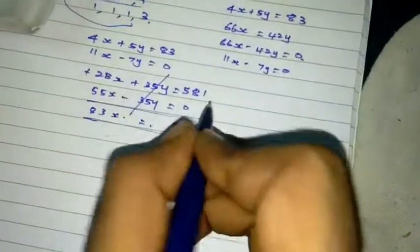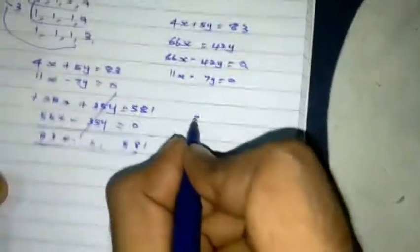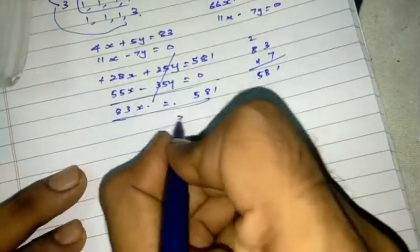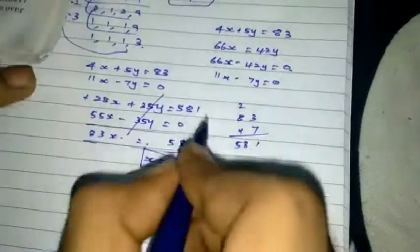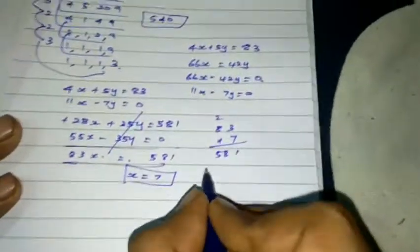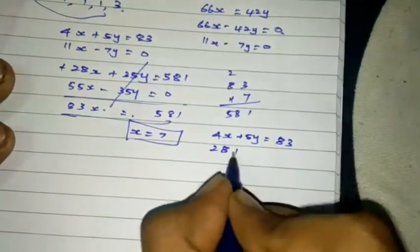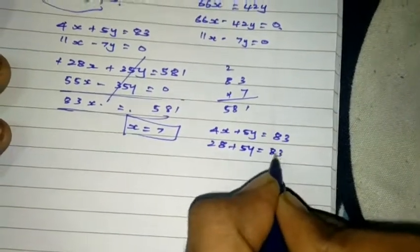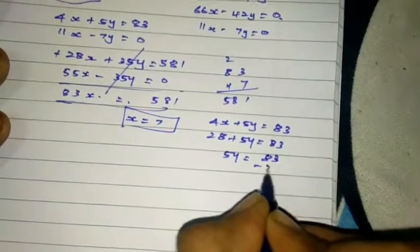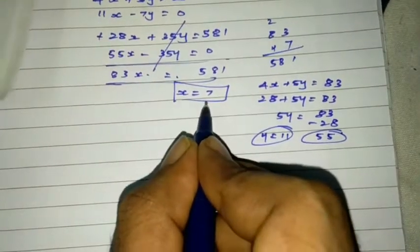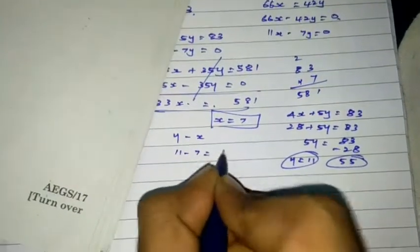So 83X is equal to 581. So X is equal to 7. Y is equal to 7. So 4X plus 5Y equal to 83. So 28 plus 5Y equal to 83. So 5Y equal to 55. Y is equal to 11. Y minus X is equal to 11 minus 7 is equal to 4.